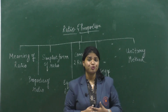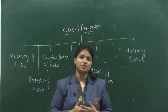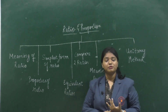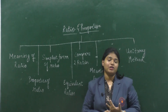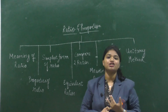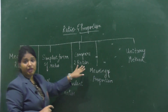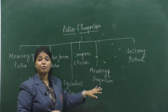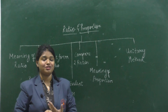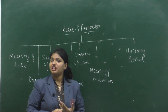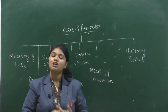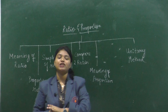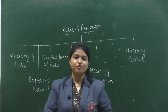In today's session we learned: the meaning of ratio — comparing two things using division; properties of ratio — same kind, order matters (a:b ≠ b:a), and ratio has no unit; how to compare and find equivalent ratios; proportion and its terms means and extremes, with the rule that the product of extremes equals the product of means; and finally the unitary method. Thank you, students.